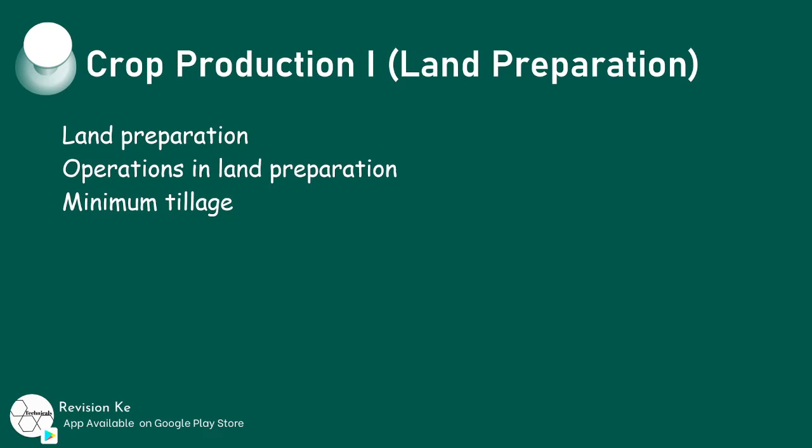Relate each cultivation operation to the correct tools or equipment — that is, implements — and prepare a piece of land ready for crop production. That way we'll have covered this topic extensively.